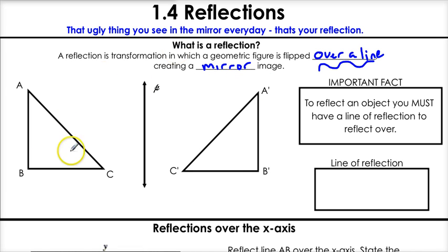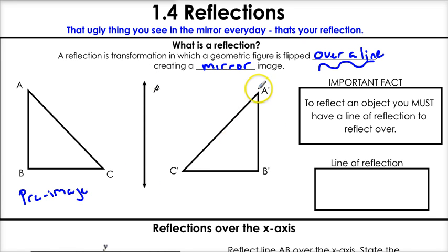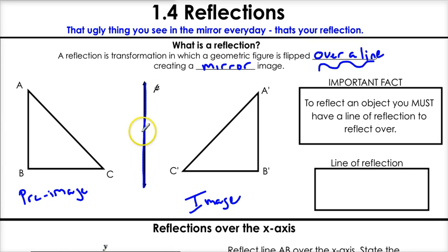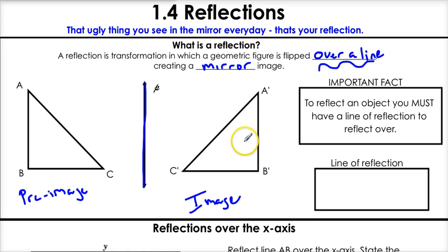Let's look at our example. We have our pre-image ABC. It reflects over line P to give us our image A prime, B prime, C prime. And if you look here, these two are mirror images of each other. And there was a line that it reflected over — those are our two key points. You reflect over a line, always over a line, and the result — your image is a mirror image.